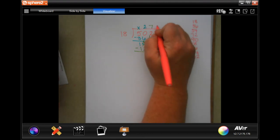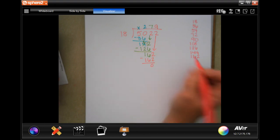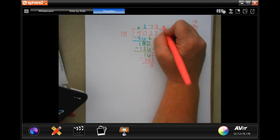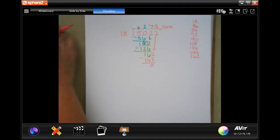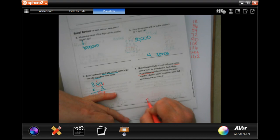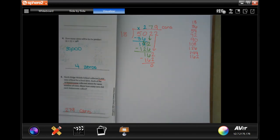So 18 times 9 was 162. Get 0. So 279 cans each. So 279 cans. Okay, guys, show your work. Pause it. Show your work. It's important.